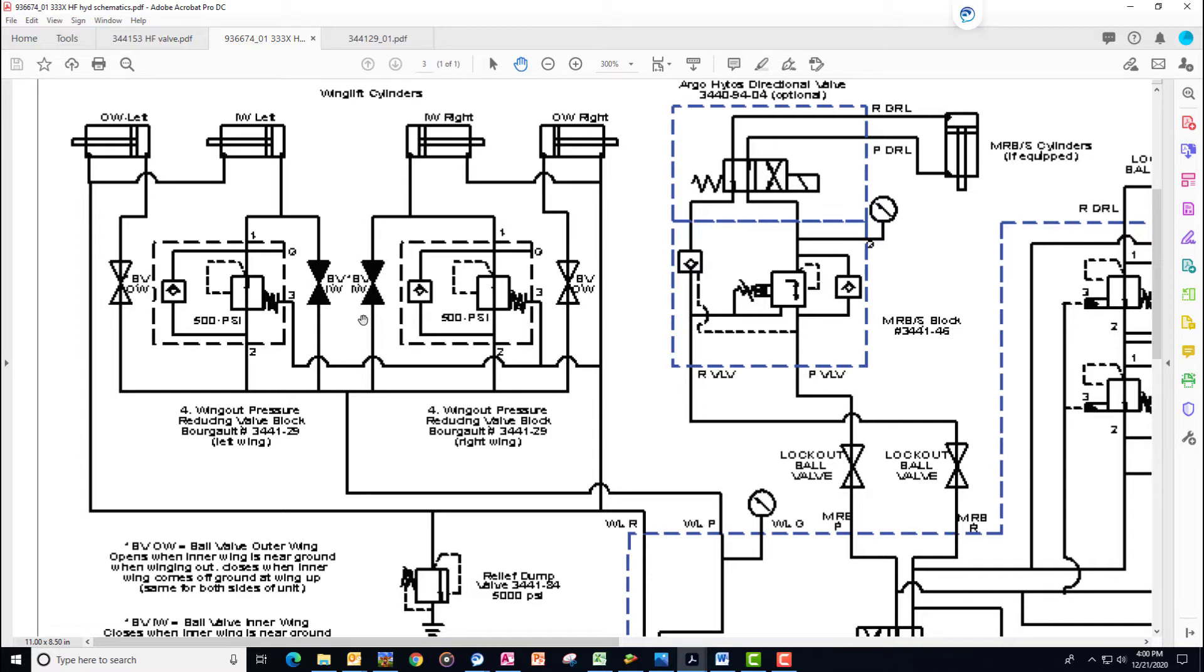There's a mirrored setup, right-hand side, left-hand side. Then at the same time, when the wings are up, the outer wing ball valve is closed, stopping any oil flow to the outer wing. That effectively lets the inner wing unfold and come to the ground.